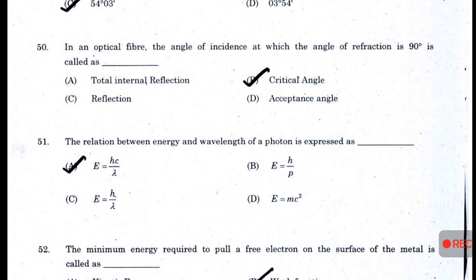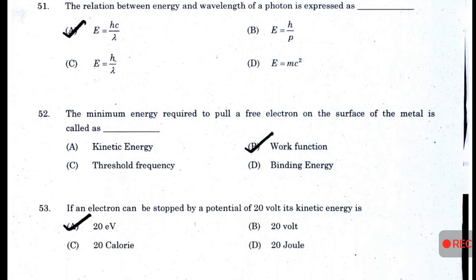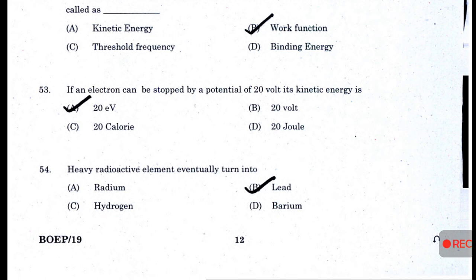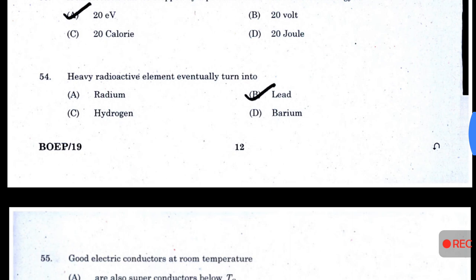The relation between energy and wavelength of a photon is E = hc/λ. The minimum energy required to pull a free electron from the surface of a metal is called the work function. If an electron can be stopped by a potential of 20 volts, its kinetic energy is 20 eV. Heavy radioactive elements eventually turn into — answer B — lead.